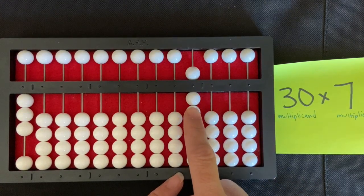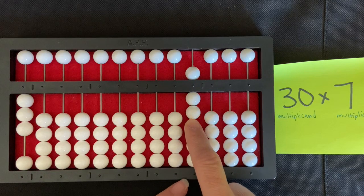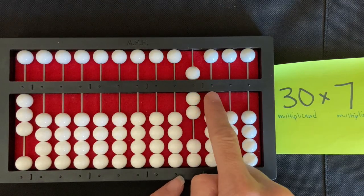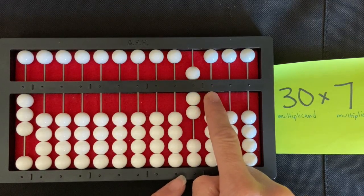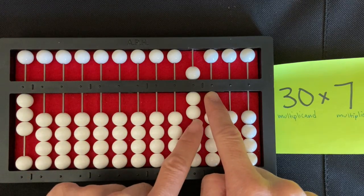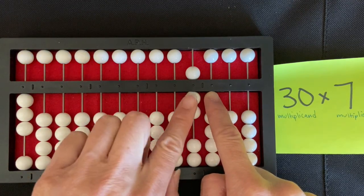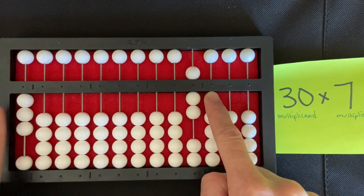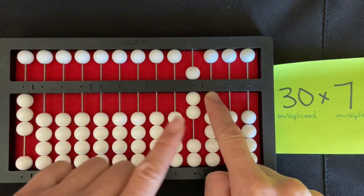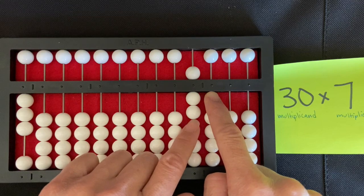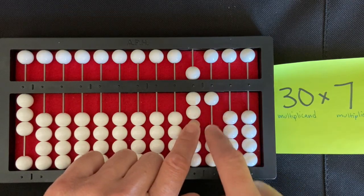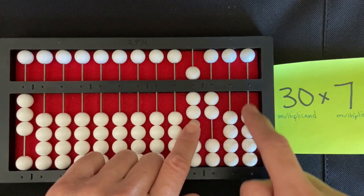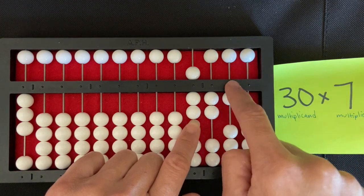Now that I have my seven set in the thousands rod, I'm ready to begin my multiplication. I move my right index finger directly to the right of my multiplier and I use my left index finger to read my problem. So I'm going to start here with seven times three. I know that seven times three is 21, so I'm going to think of that as two, one, and I'm going to set two in the hundreds and one in the tens.